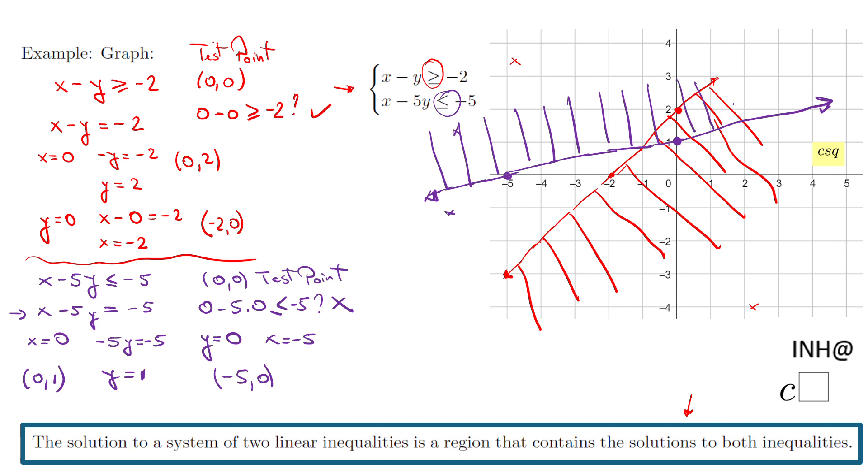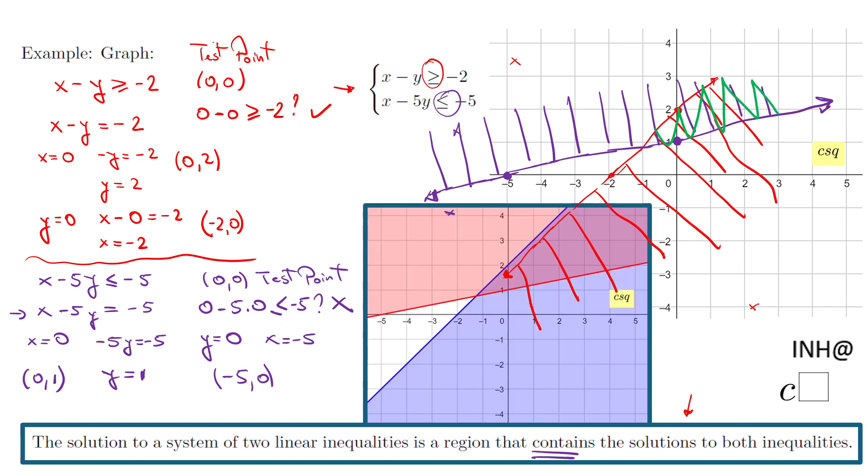And now we're going to go back to what I said at the beginning. The solution set is the region that contains the solution set to both inequalities, which is which one? This one right here. This is the solution set for our problem. Okay, you can see a better picture right here.